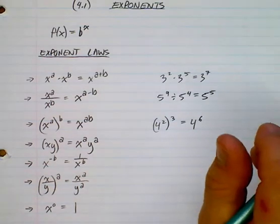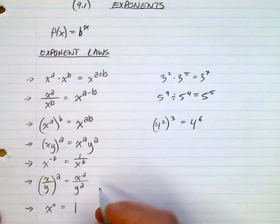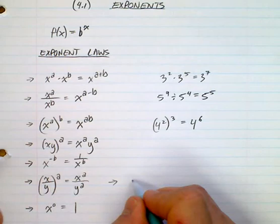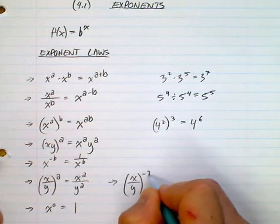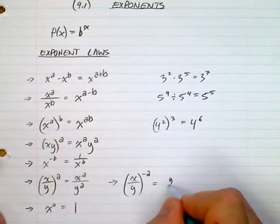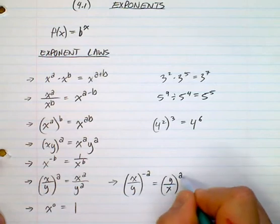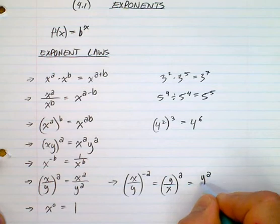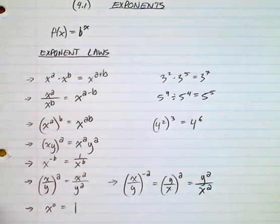What else can we do here? If I have, similarly from this, if I have x over y negative a, that's going to equal y over x to the a, which is y to the a over x to the a. So there's a bunch of different things that we can sort out here.